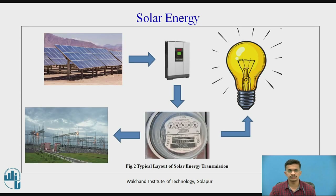The figure shows a typical layout of solar energy transmission. The first figure shows installed solar panels which, when exposed to sunlight, produce electricity. That electricity is transferred to a converter which converts DC form into AC form. The AC current is then transferred to the meter and used for household appliances. Excess electricity can also be transferred to the power grid.